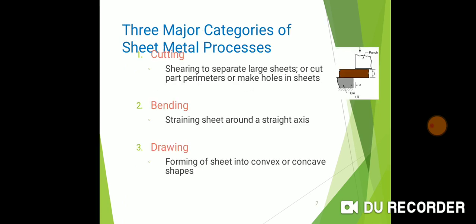Three major cutting categories of the sheet metal process: cutting, bending, and drawing. This figure shows the cutting process. Cutting is like shearing operation. Shearing is when the large sheet is cut to make a hole in the sheet. It is called cutting operation, which is the finishing process. It removes the unwanted material of the object.